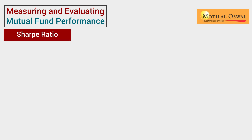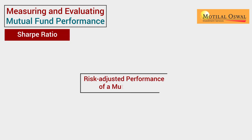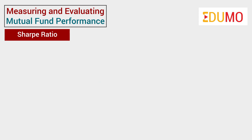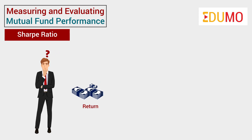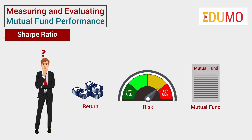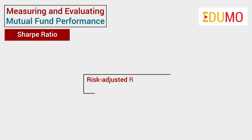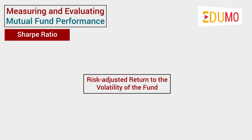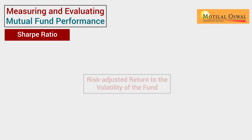Lastly, we have the Sharpe ratio. This ratio gives us the risk-adjusted performance of a mutual fund. It shows us how much additional return we are earning for every unit of risk we undertake by buying a unit of the mutual fund. It is the ratio of the risk-adjusted return to the volatility of the fund, which is shown by standard deviation.